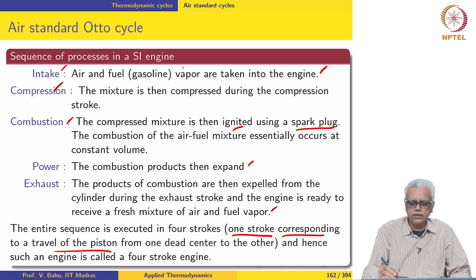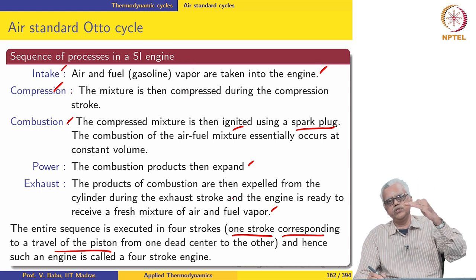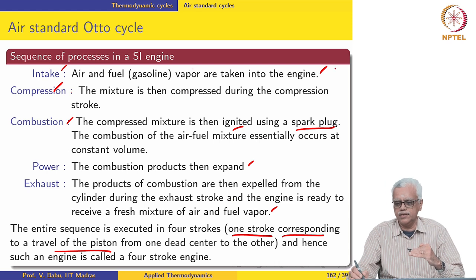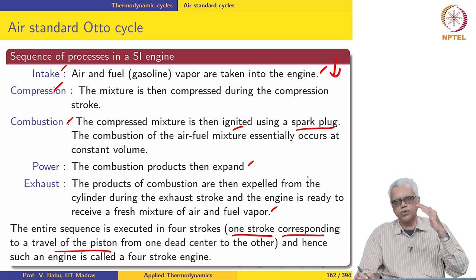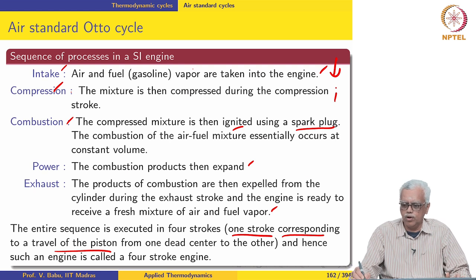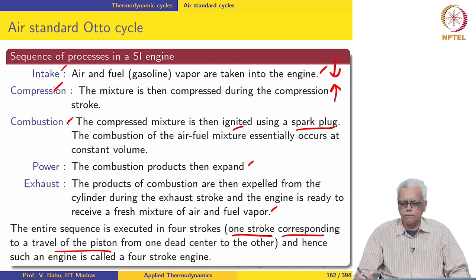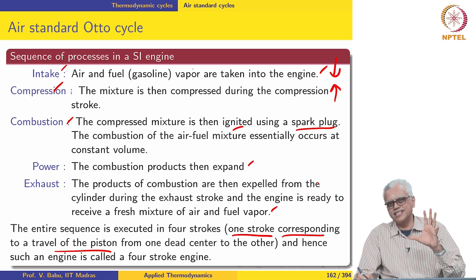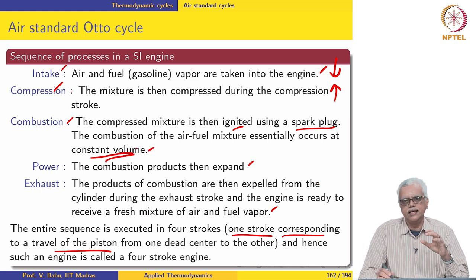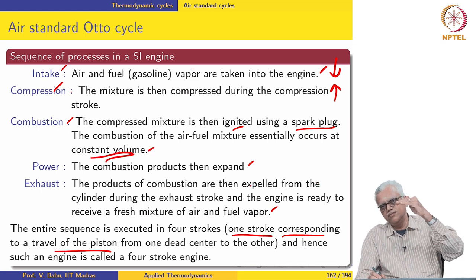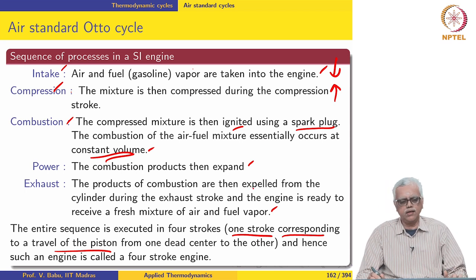In the intake stroke the piston travels from top dead centre to bottom dead centre. In the compression stroke, it travels from bottom dead centre to top dead centre. The combustion process then occurs essentially at constant volume, meaning there is very little piston movement during combustion.